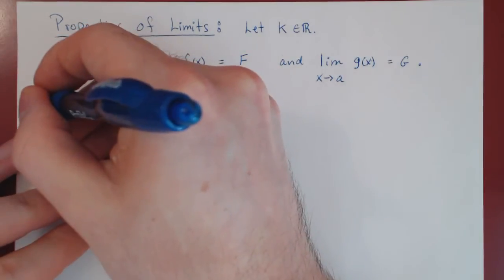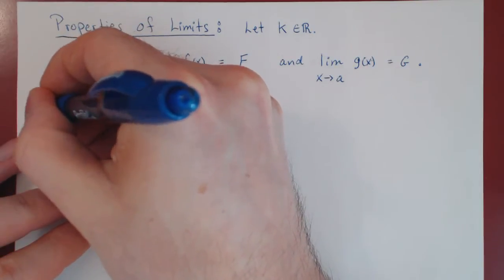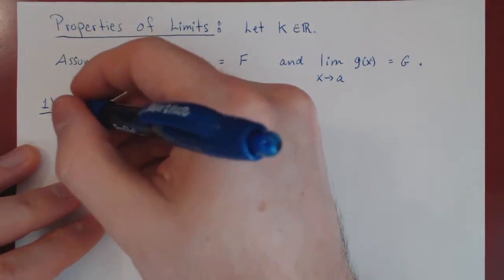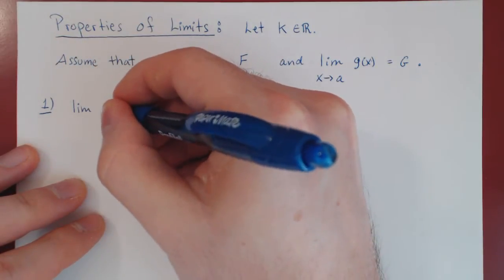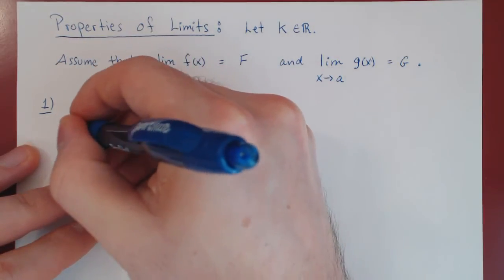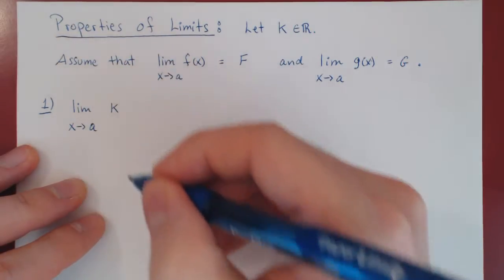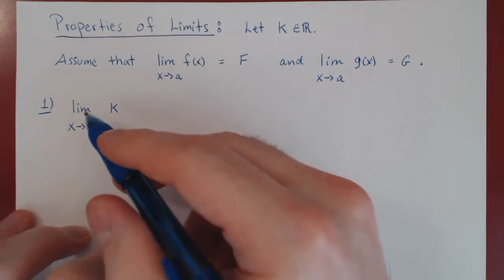So first property. You'll see they're all very intuitive. So what if we ask, what happens to the constant k as x is approaching a?